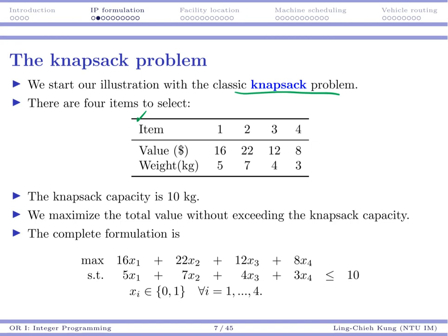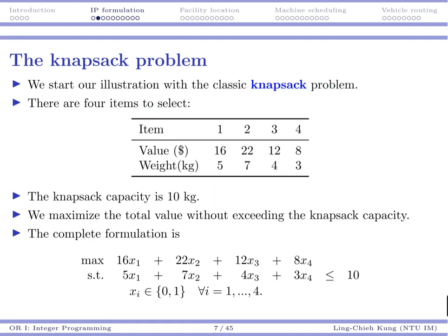For each item, we have their values and their weights. The knapsack capacity is 10 kilograms. We cannot exceed the knapsack capacity, and we want to maximize the total value. We want to select some out of these four items so that our knapsack is good enough to carry those weights and maximize total value. We don't really want to solve this problem — this is just an instance to help us understand what we want to do.